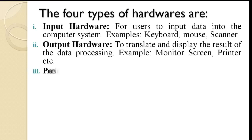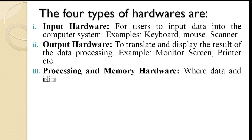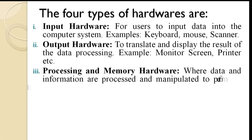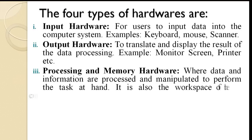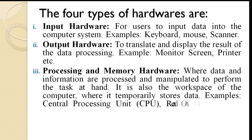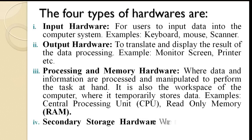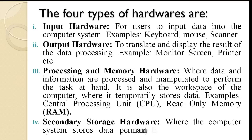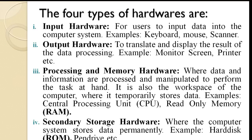3. Processing and Memory Hardware — where data and information are processed and manipulated to perform the task at hand. It is also the workspace of the computer, where it temporarily stores data. Examples: Central Processing Unit (CPU), Read Only Memory (ROM), RAM. 4. Secondary Storage Hardware — where the computer system stores data permanently. Examples: Hard Disk, Pen Drive.